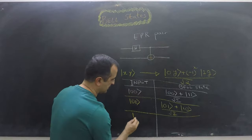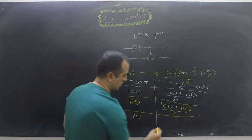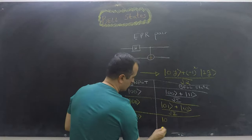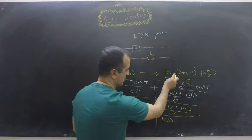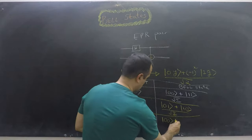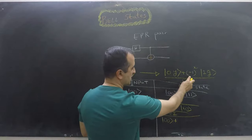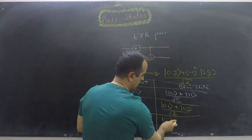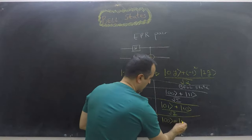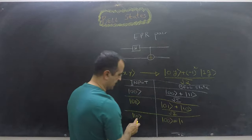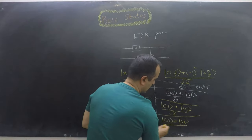If my input is |10⟩, then the corresponding Bell state is going to be |00⟩ because y is 0. Then, because x is 1, my sign is going to be minus. So I will have minus |11⟩ — because y is 0, y complement is 1 — divided by square root of 2.